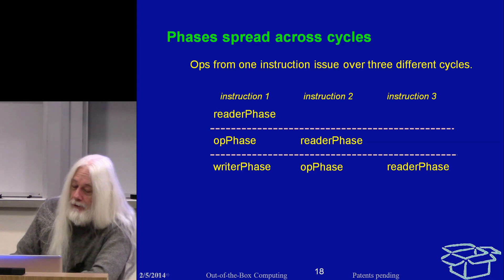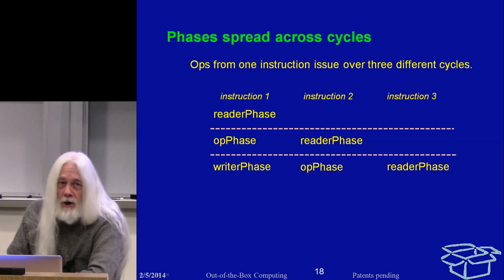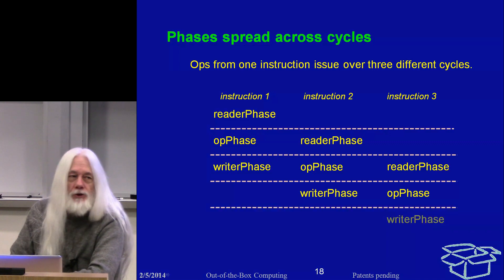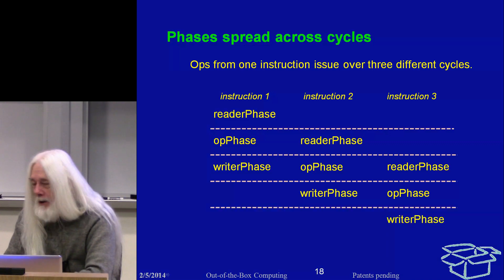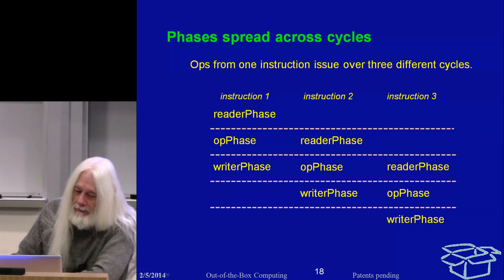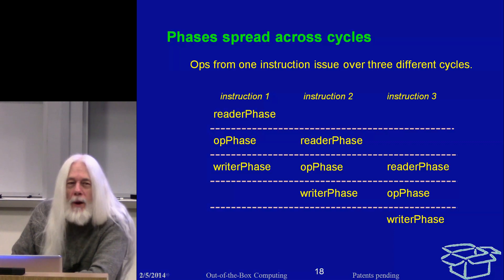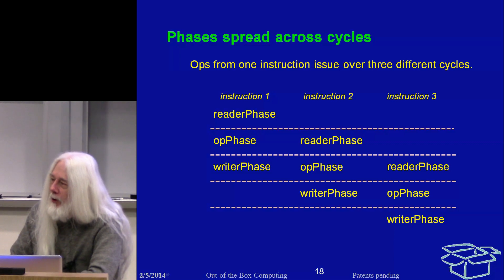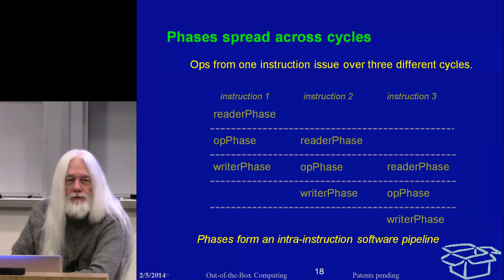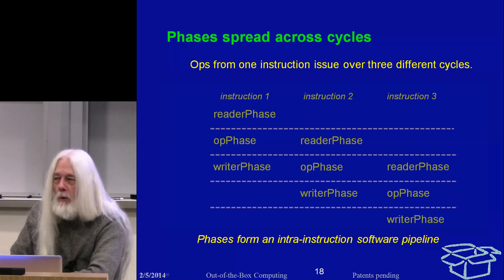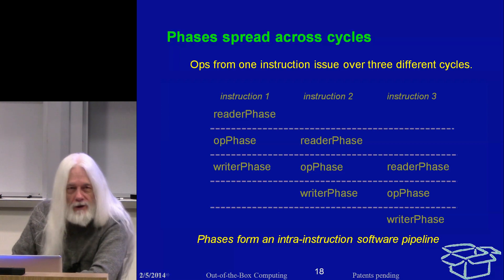So each instruction executes over three cycles, which are one cycle phased away from the prior and subsequent instruction. One way of looking at this is that the phases form an intra-instruction software pipeline — values get passed from one to the next over multiple cycles, still within one instruction, in the way that a software pipeline loop does. It's an analogy that can't be pushed too far, but it's a way of thinking about it.